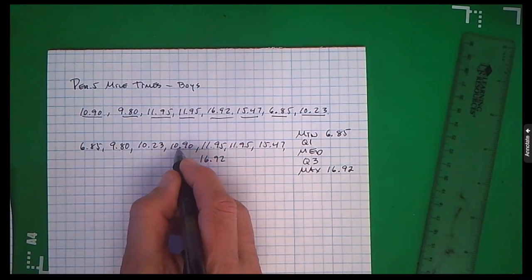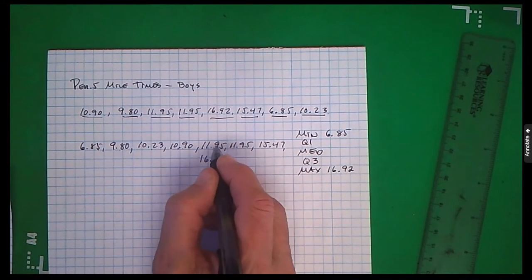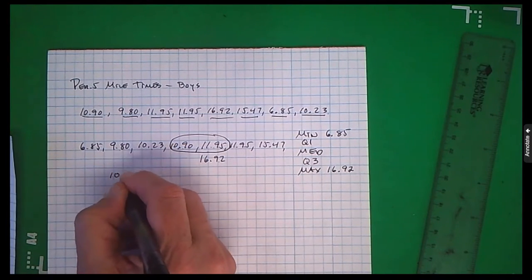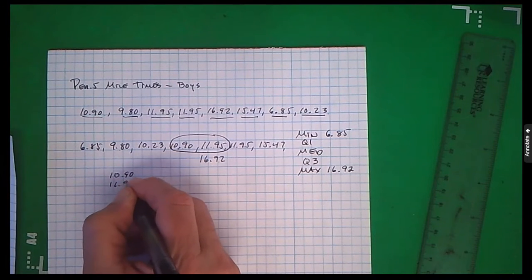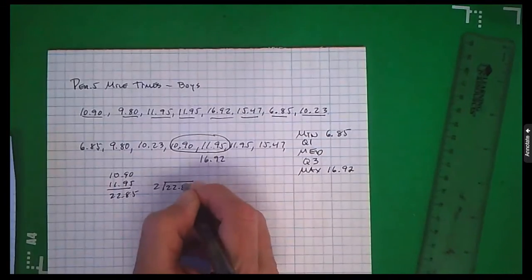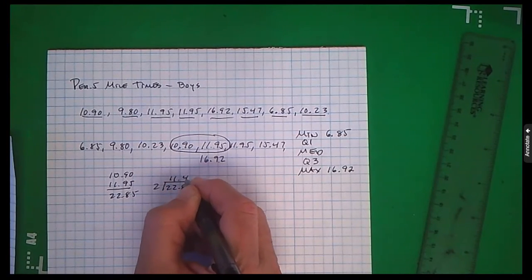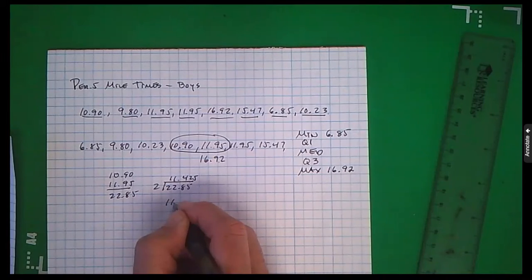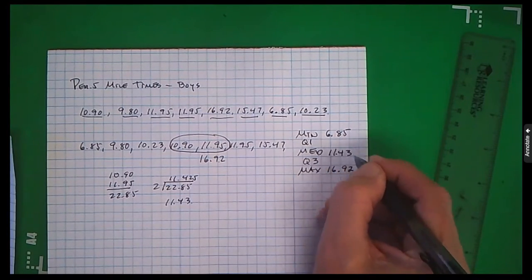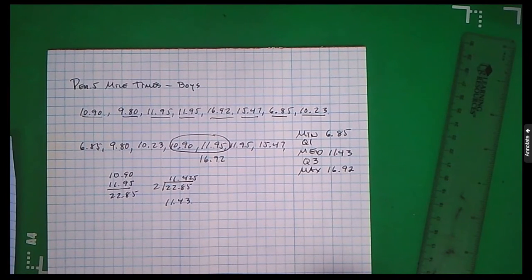1, 2, 3, 4. 1, 2, 3, 4. We have two in the middle. I'm going to add them. I'm going to divide that by two. Round it off here. Okay, our median is 11.43.